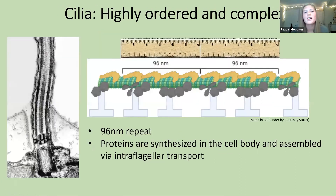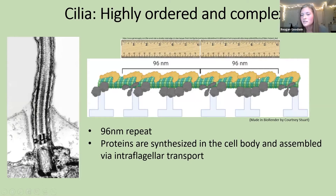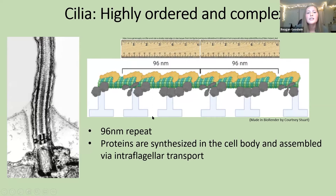In addition to this structure, if you were to take that same cilium and lay it on its side, there is a repeating set of proteins that occur every 96 nanometers — essentially like a molecular ruler. For example, if you look at this Y-shaped protein in purple-gray, it occurs at one inch mark on the ruler, and in the next repeat you see the same Y-shaped protein again. Interestingly, all of these proteins are assembled in the cell body and then have to be transported to the tip of the cilium to be assembled.